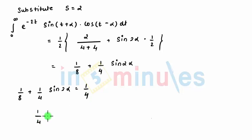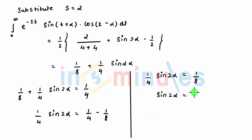So I can write 1 by 4 sin 2 alpha equals 1 by 4 minus 1 by 8. So this further comes to be 1 by 4 sin 2 alpha equals 1 by 8. This we can write as sin 2 alpha equals 4 by 8 which comes to be sin 2 alpha equals 1 by 2. So sin 2 alpha equals sin 1 by 2 which we can write further as 2 alpha equals pi by 6.